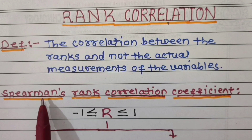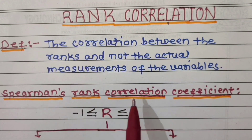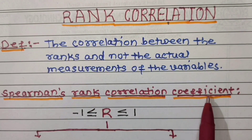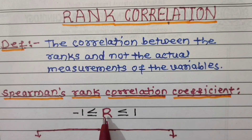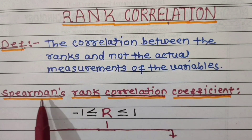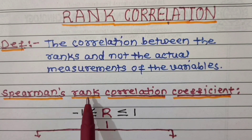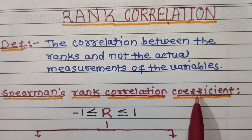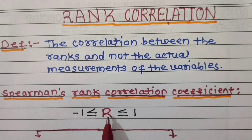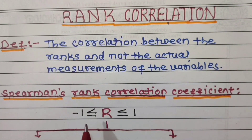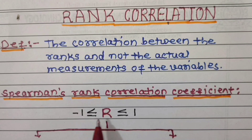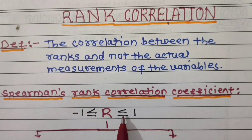Now we have to know about Spearman's rank correlation coefficient. Capital R is Spearman's rank correlation coefficient, which lies between minus 1 and 1. Hence we can write: minus 1 less than or equal to R less than or equal to 1.